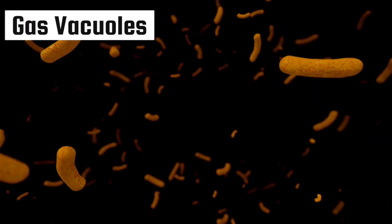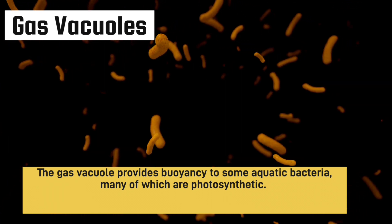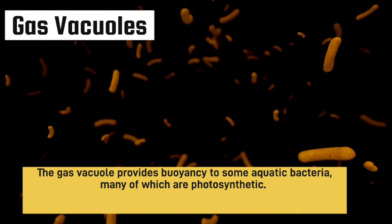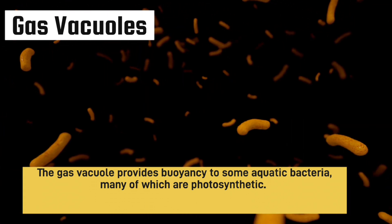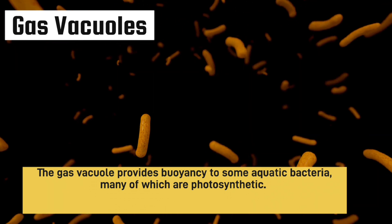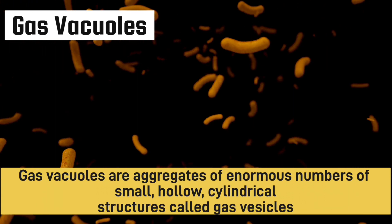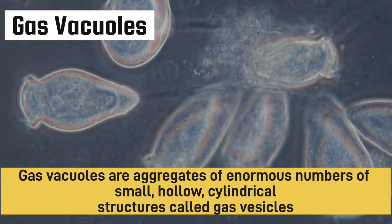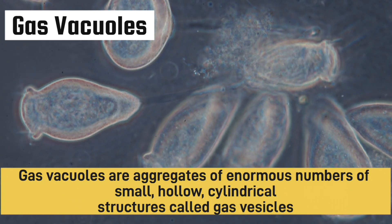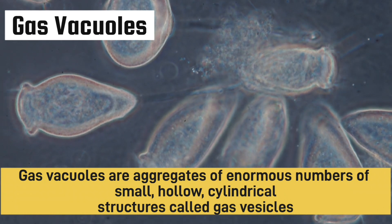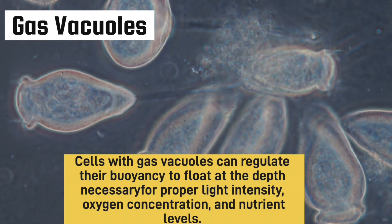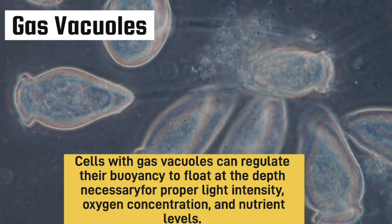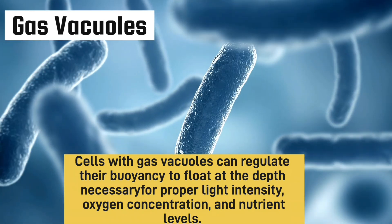Gas vacuoles provide buoyancy to some aquatic photosynthetic bacteria, helping them float on the water body to carry out photosynthesis and take up nutrients via gaseous exchange. Gas vacuoles are aggregates of enormous numbers of small hollow cylindrical structures called gas vesicles. Gas vesicle walls are composed of many copies of a single small protein. These proteins are assembled to form a rigid cylinder that is impermeable to water but freely permeable to atmospheric gases such as oxygen and CO2.